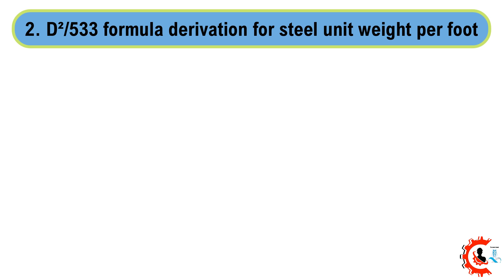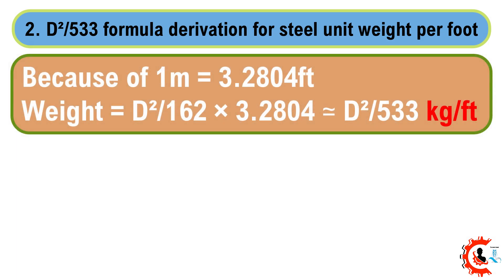Formula 2: Diameter squared divided by 533 — formula derivation for steel unit weight per foot. Because 1 meter equals 3.2804 feet: Weight = d² / 162 × 3.2804, which is approximately equal to d² / 533.